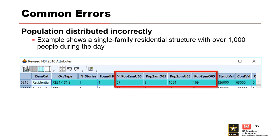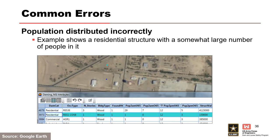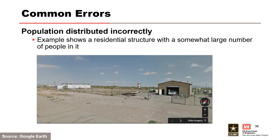Population distributed incorrectly is something you'll see quite a bit. You might see a single-family residential home with a thousand people in it during the day — obviously incorrect. In this situation, the structure happened to be next to a census block with an apartment complex, and population from the apartment complex spilled over. Also consider: when we talked about occupancy types and how people evacuate, you'd now have a thousand people evacuating as a single giant group as if it were a single-family residence. Something to look out for — the type of structure and the number of people in it both matter. Don't just delete the population; redistribute it.